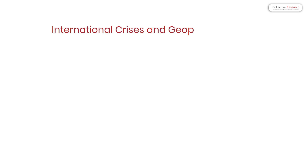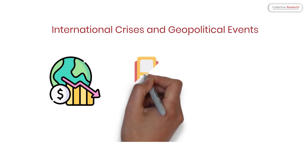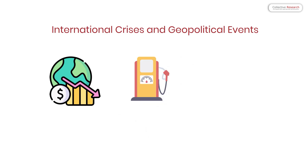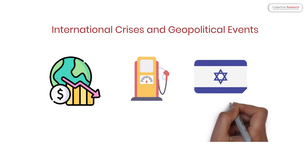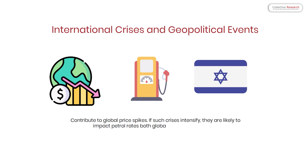International crises and geopolitical events can escalate petrol prices in Pakistan. Events such as the Russia-Ukraine conflict and the Israel-Palestine tensions contribute to global price spikes. If such crises intensify, they are likely to impact petrol rates both globally and within Pakistan.